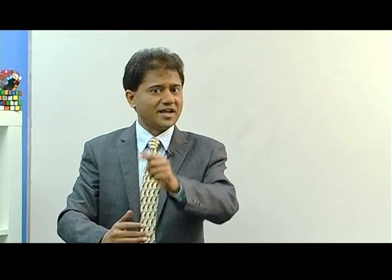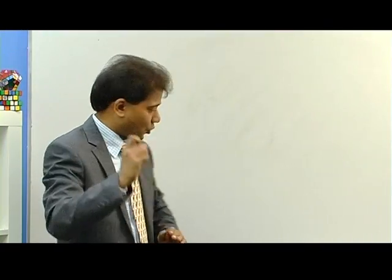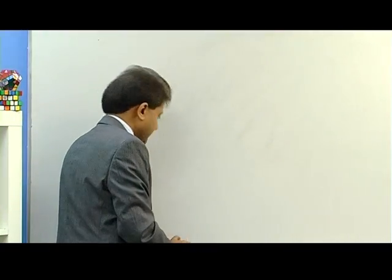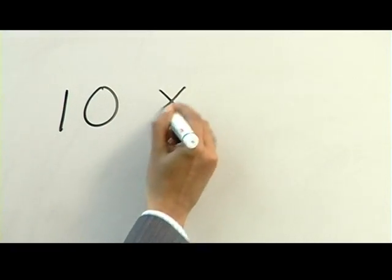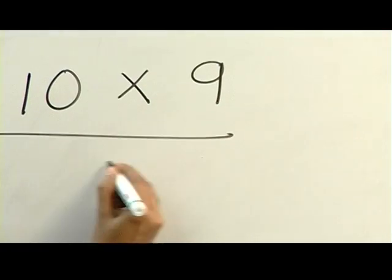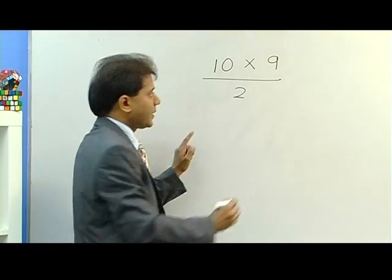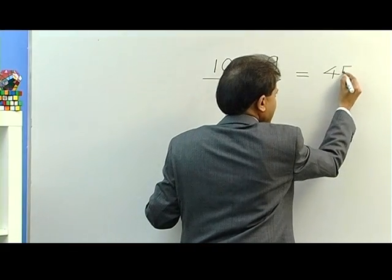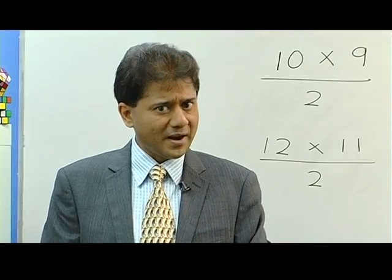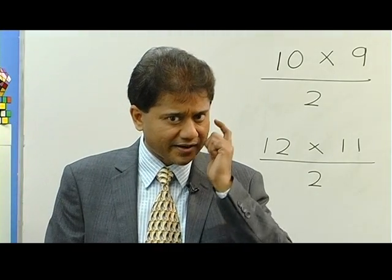Now let's discuss the fifth puzzle: 10 people at a party, everybody shakes hands — how many handshakes? There is a very simple formula. All you have to do is multiply 10 with the number before it: 10 times 9, then divide by 2. So 10 times 9 is 90, divided by 2 is 45. There are 45 handshakes. See you next Monday — until then, keep your mind ticking!